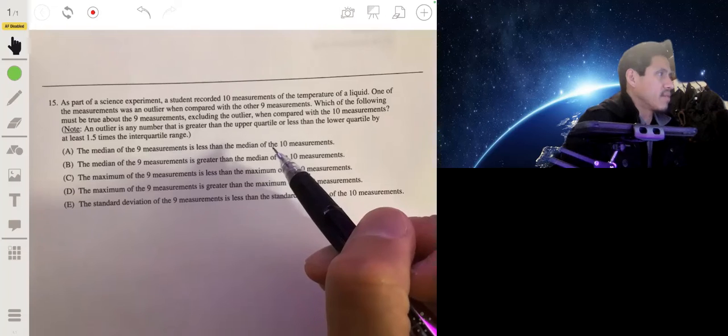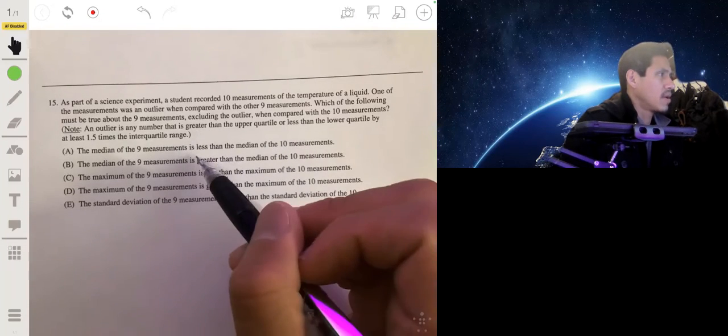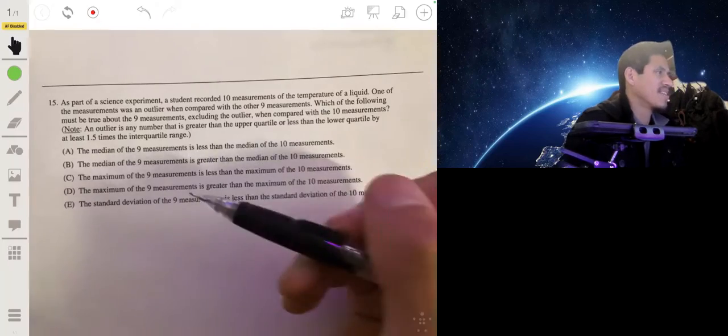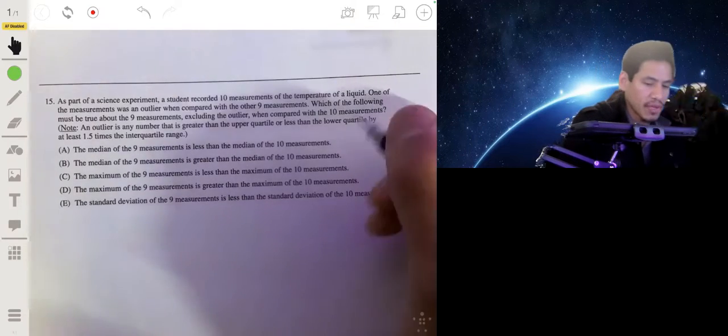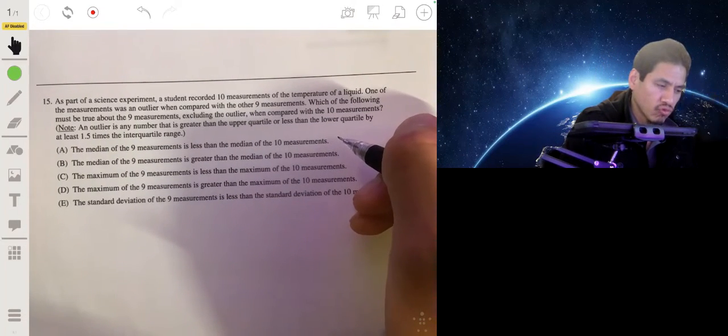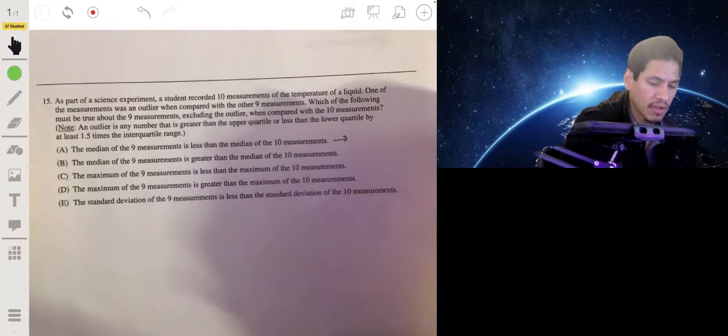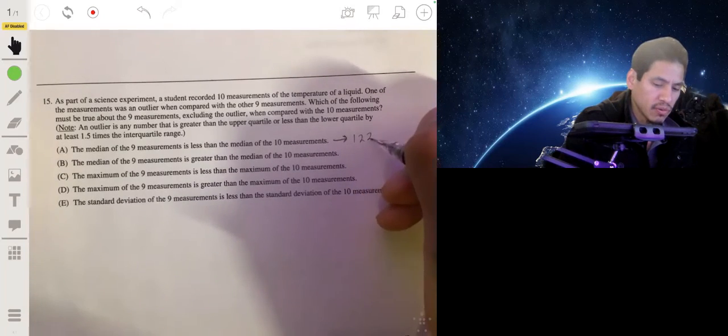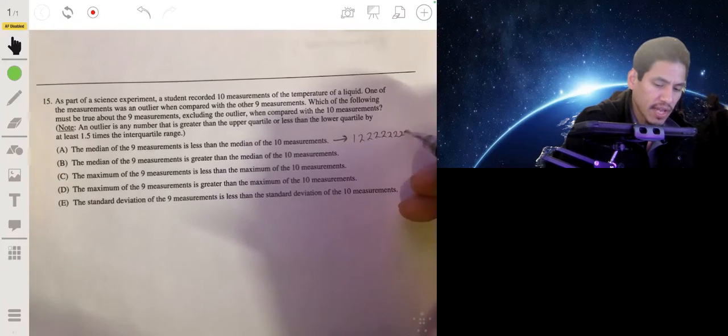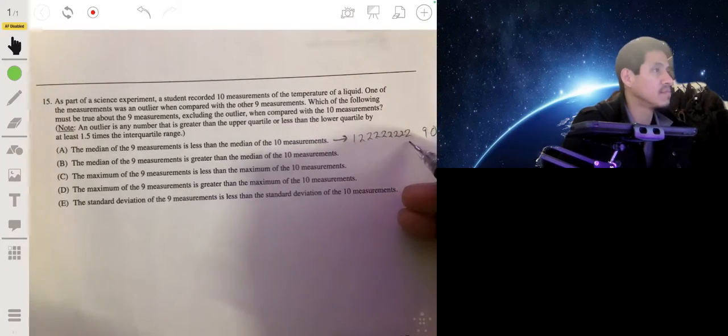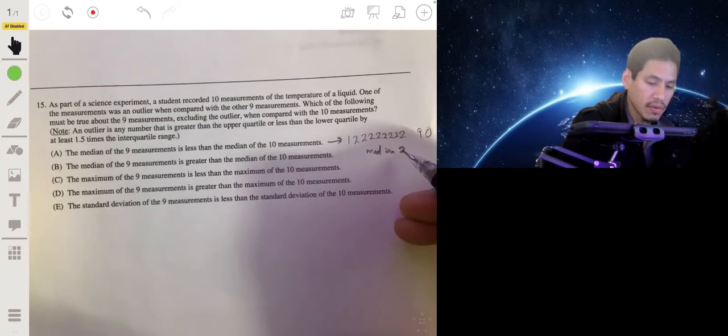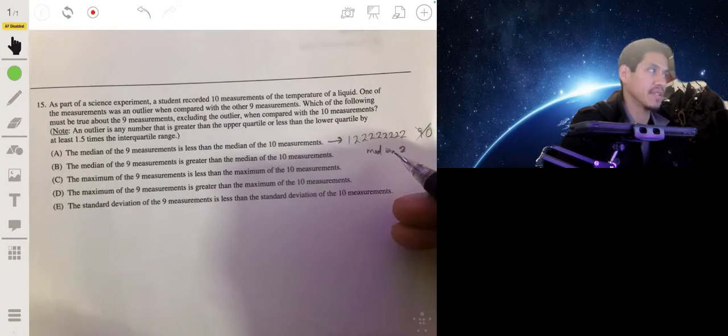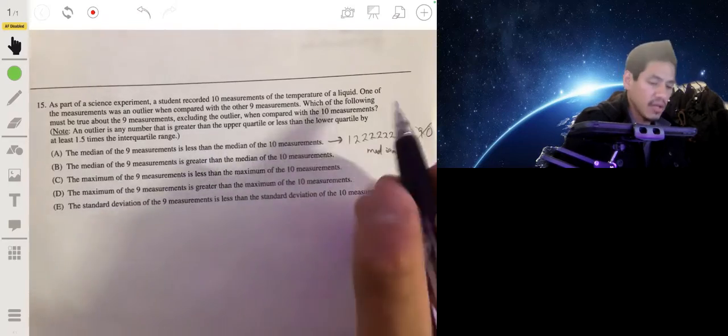So the median of the nine measurements is less than the median of the 10 measurements. No, you could have them both have the same median. Like an example would be, you could have values 1, 2, 2, 2, like 1, 2, 3, 4, 5, 6, 7, eight twos, and the other value was 90. So you have these are your 10 data values. The median would be two still. If you took away the 90, the median of these nine values will still be the same. So it wouldn't, it's not necessarily going to be less. So it wouldn't be A.